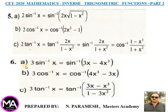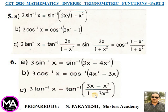Sixth point — triple angle formulas: (A) 3sin⁻¹x = sin⁻¹(3x−4x³). (B) 3cos⁻¹x = cos⁻¹(4x³−3x). (C) 3tan⁻¹x = tan⁻¹[(3x−x³)/(1−3x²)].